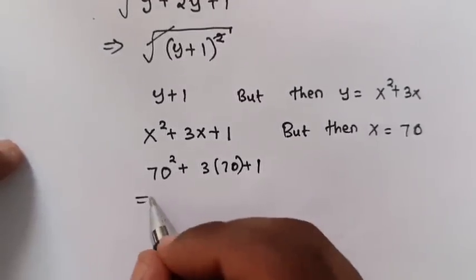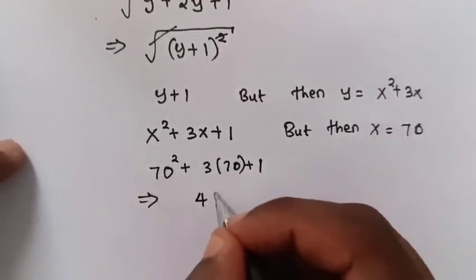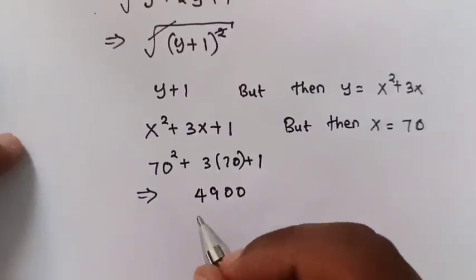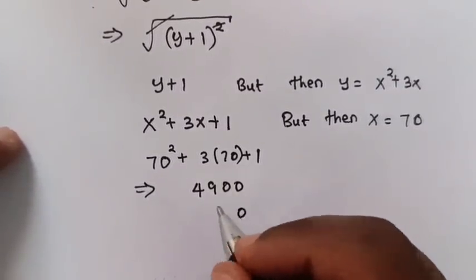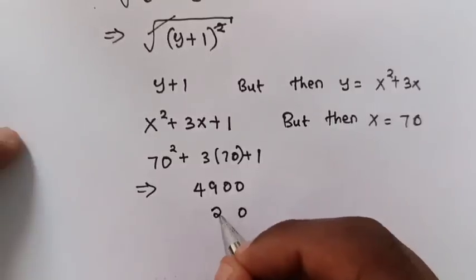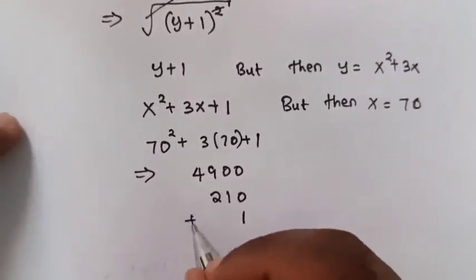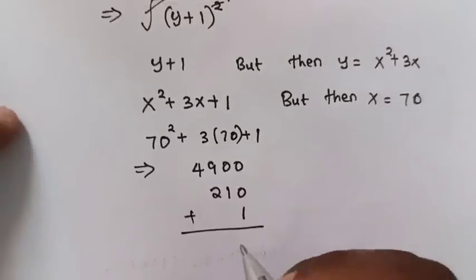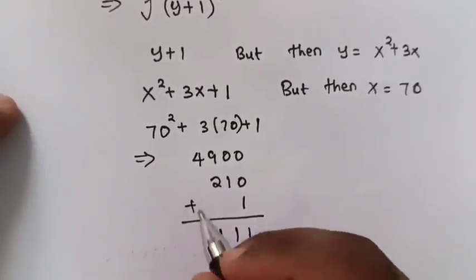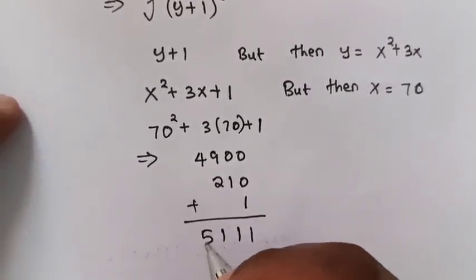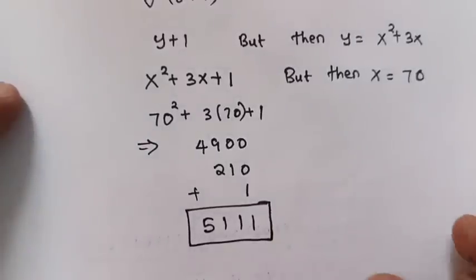So when we sum up: 70 squared is 4900, plus 3 times 70 is 210, plus 1. So summing up it will be 5111. So this is the final answer.